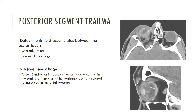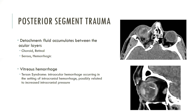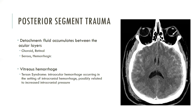Traumatic orbital injury may result in shearing of retinal blood vessels, with subsequent hemorrhage into the vitreous humor. On CT, vitreous hemorrhage manifests as relatively ill-defined heterogeneous hyperattenuation within the normally hypoattenuating posterior segment of the globe, or as layering hyperdense fluid in the posterior segment. Terson syndrome was originally described as vitreous hemorrhage occurring in patients with intracranial subarachnoid hemorrhage, but now it is applied to the presence of any intraocular hemorrhage in the setting of intracranial hemorrhage. The likely etiology is increased intracranial pressure.